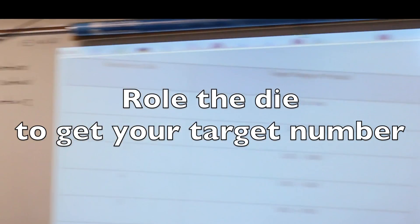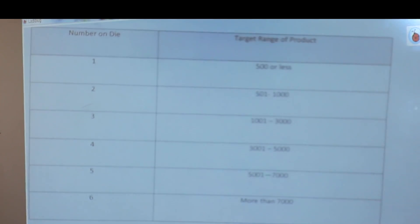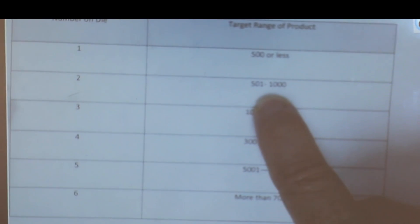All right, so we roll the dice to see what our target number is. So we roll the dice, and we roll a two. Our target number is going to be anywhere between 501 and 1,000.